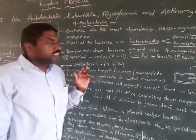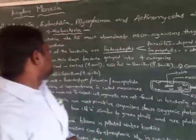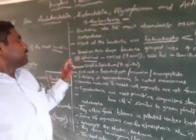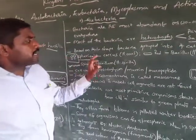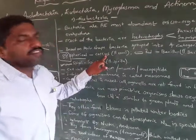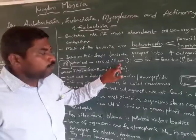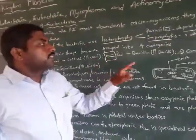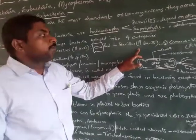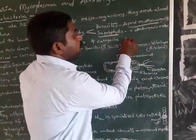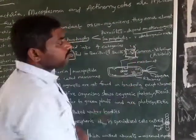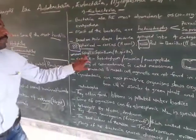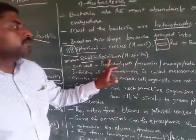Based on their shape, bacteria are grouped into four categories: spherical or round-shaped bacteria called coccus (plural: cocci); rod-shaped bacteria called bacillus (plural: bacilli); comma-shaped bacteria called vibrio (plural: vibrios); and spiral-shaped bacteria called spirilla.